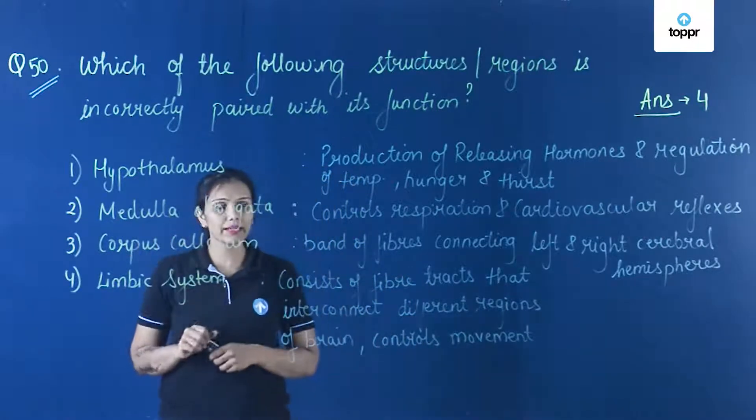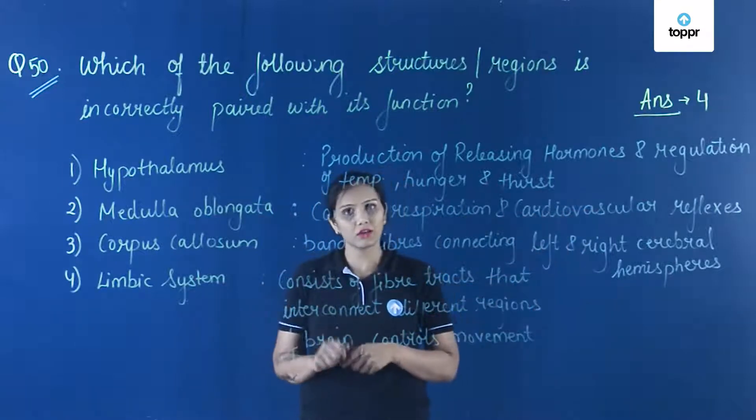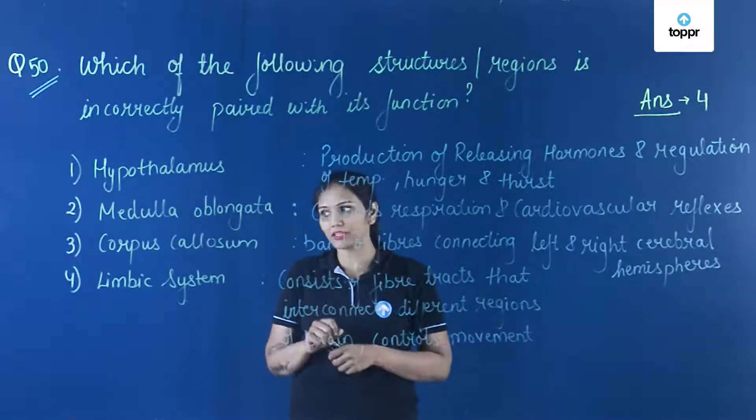Second, medulla oblongata is the part of the brain which controls the respiration and cardiovascular reflexes. This is also correct option.